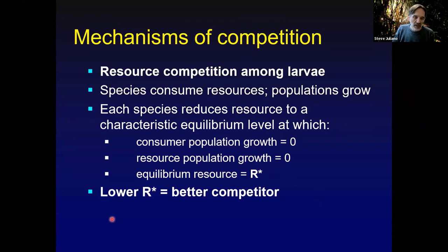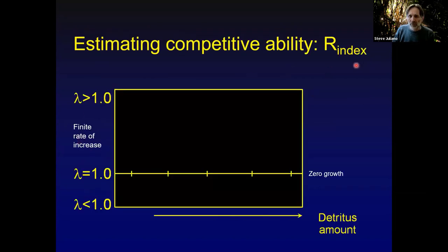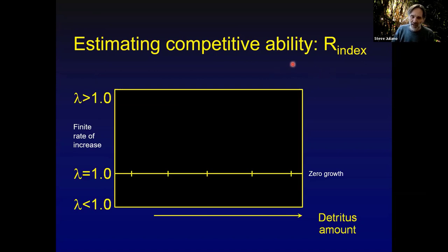The models make a clear prediction: whichever species has a lower R* — a lower equilibrium resource abundance — will be the better competitor and should be able to competitively exclude any species with a greater value of R*. The difficulty for mosquitoes like these two Aedes is that equilibrium conditions are likely rare in nature. In my lab, we investigated this by designing a short-term approach to measure something we call R index — not R* exactly, but a good approximation. We start with a laboratory system stocked with a certain amount of detritus, raise mosquito cohorts, and get estimates of rate of increase from life table approaches.